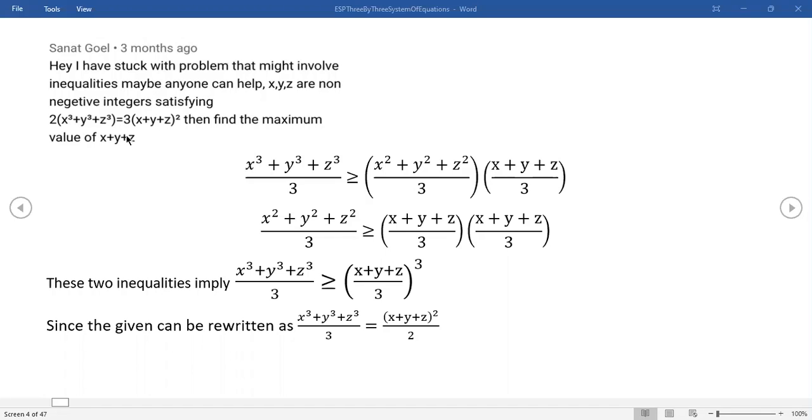I think it could be solved with Lagrange multipliers, but I did it a different way based on inequalities and direct manipulation. We have this constraint: 2(x³+y³+z³) = 3(x+y+z)². We're given that information and are supposed to find the maximum value of x+y+z.